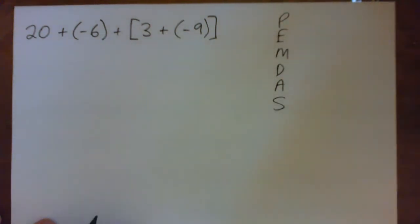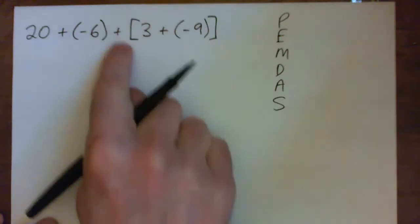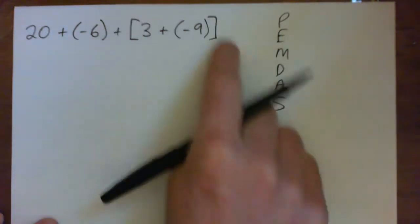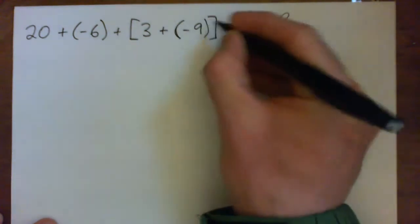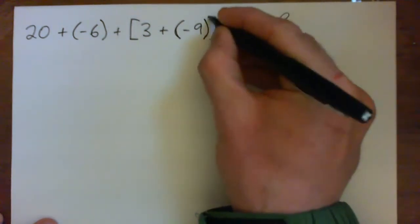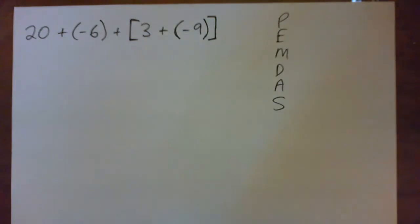Funny enough, it doesn't really matter because there's a plus sign on the outside of this parentheses. So this square bracket thing can actually go away. These guys here are called parentheses. These square ones here are called square brackets, but they're the same thing. It's just another type of parentheses.